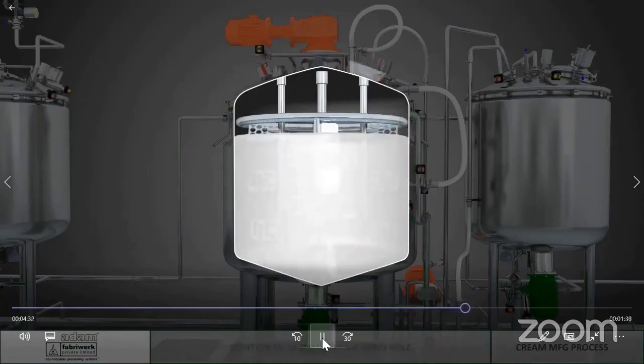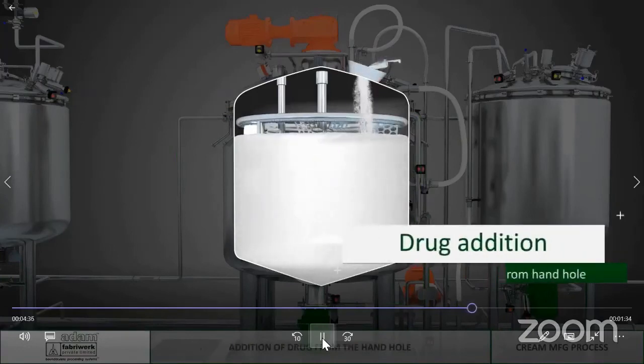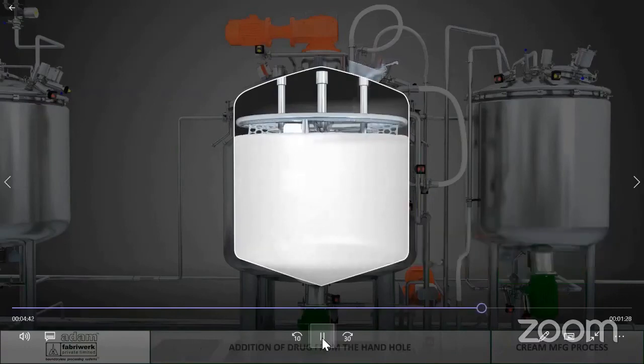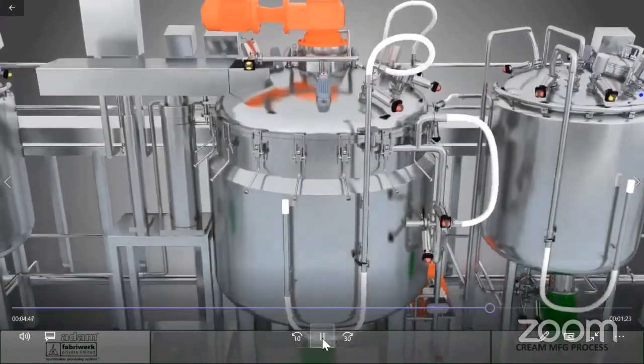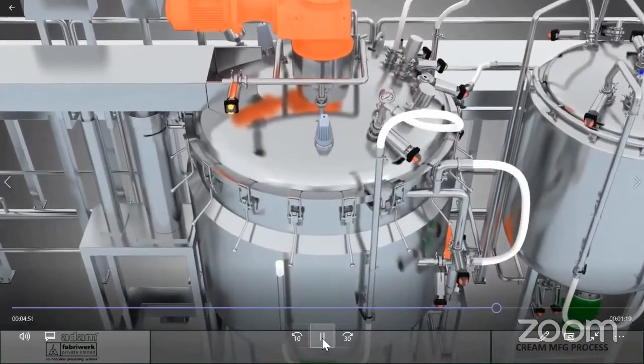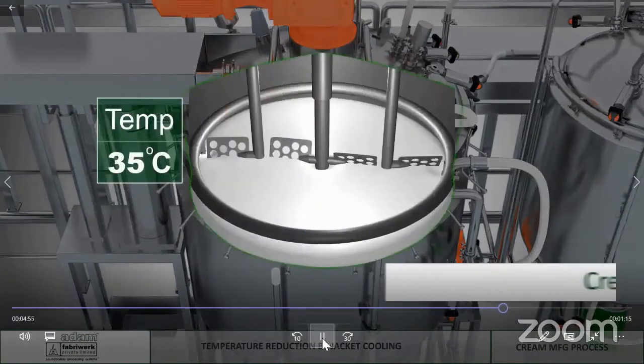There are spray balls and spray devices within the manufacturing vessel as well as the wax and water vessels which ensures cleaning efficacy within the system. There are user configurable CIP recipes which ensure complete cleaning cycles of the process system which can be customized for each product.